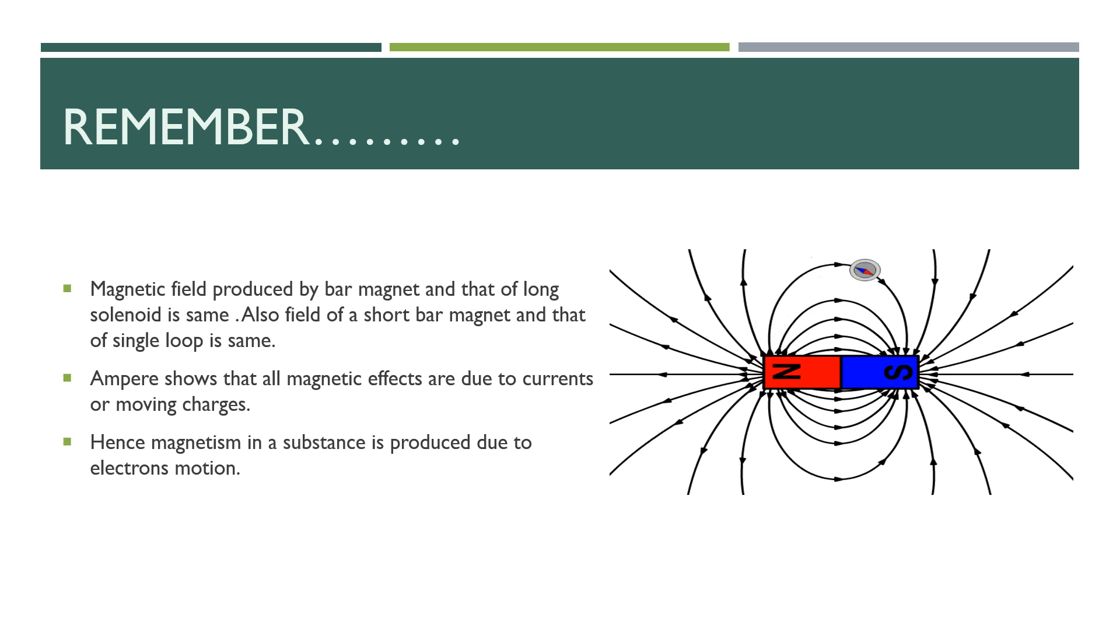It is observed that the field of a long bar magnet is like the field which is produced by a long solenoid carrying current, and the field of the short bar magnet resembles that of a single loop.